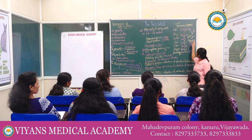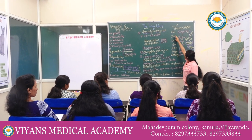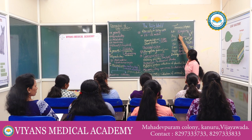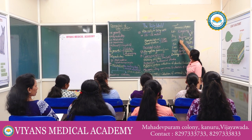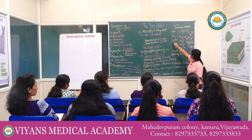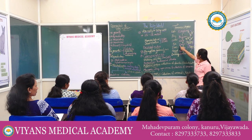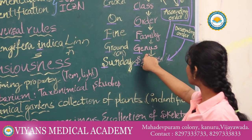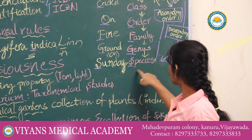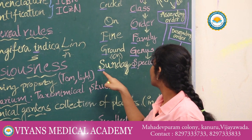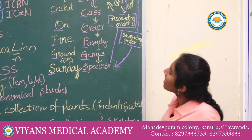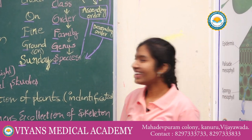Let me give a small mnemonic technique to remember the sequence. Kingdom — K for Kids. Phylum — P for Play. Class — C for Cricket. Order — O for On. Family — F for Fine. Genus — G for Ground. It is very simple to learn.